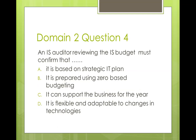Question four: an IS auditor reviewing the IS budget must confirm that A) it is based on the strategic IT plan, B) it is prepared using zero-based budgeting, C) it can support the business for the year, D) it is flexible and adaptable to changes in technologies. B is definitely out — an IS auditor is not supposed to insist on a particular budgeting method; the organization should use whichever methodology is best suited for it. The IS budget must support the business objective, and since budgets are most often annual, it should help the business achieve its objectives for that year and beyond. The best answer is C.